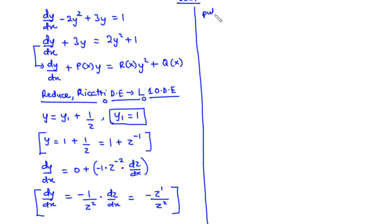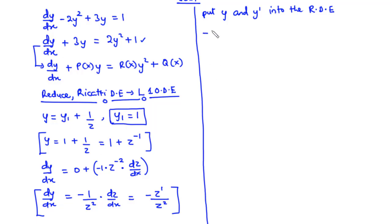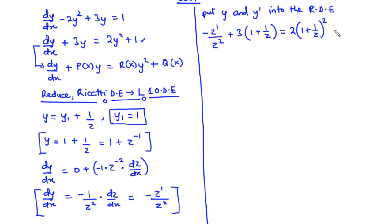We substitute y = 1 + 1/z and dy/dx = −z'/z² into the Riccati equation dy/dx + 3y = 2y² + 1. This gives: −z'/z² + 3(1 + 1/z) = 2(1 + 1/z)² + 1.